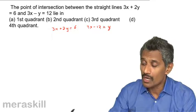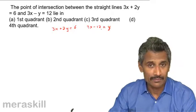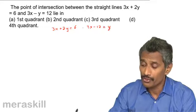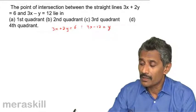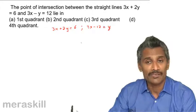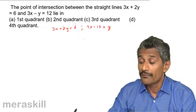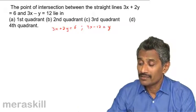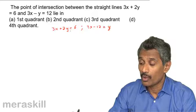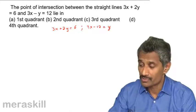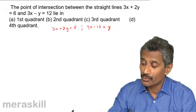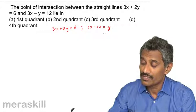Now, if you see, these two are lines. So they are linear equations in two variables. The point of intersection is nothing but the roots of this pair of simultaneous equations. So, if you want to find where they lie, you need to find what the roots of this equation is.